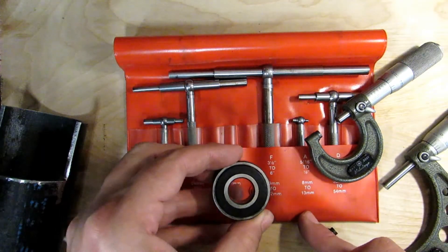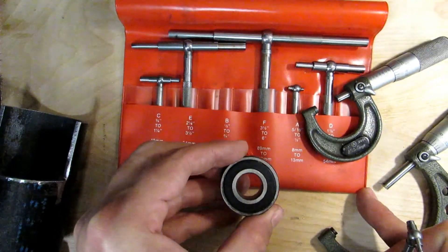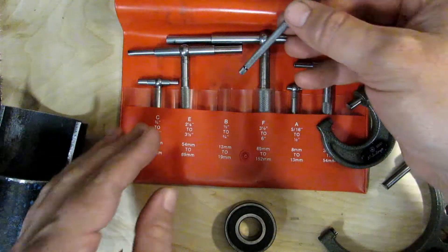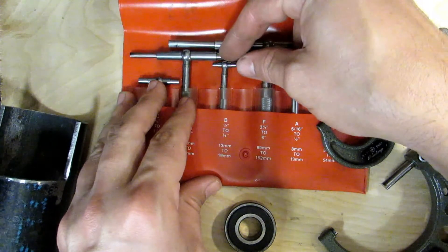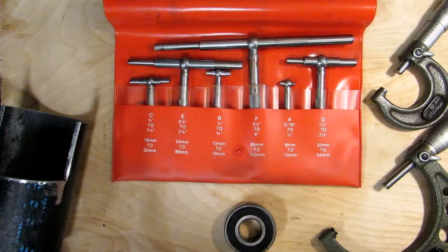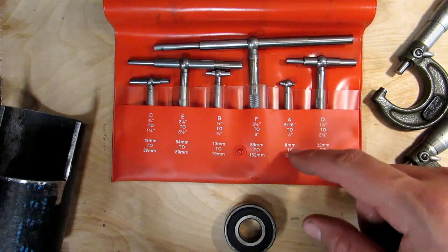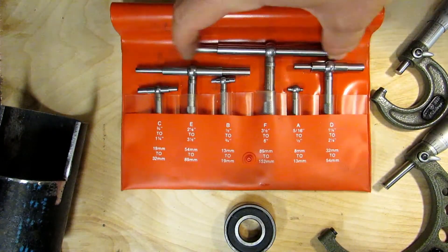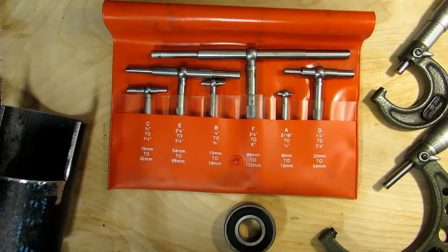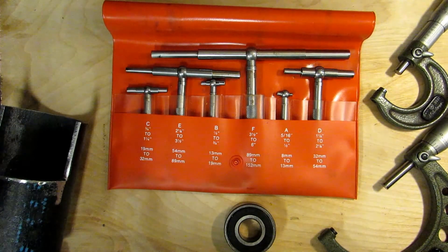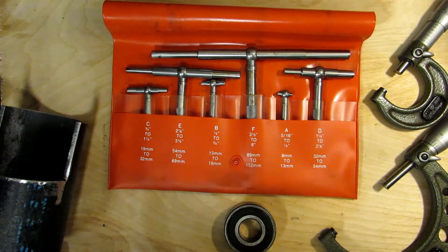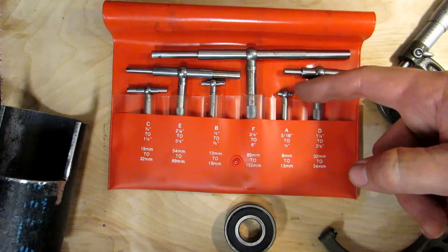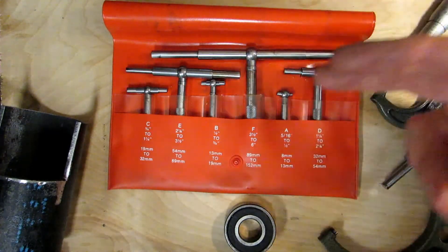So these sets measure from 5/16ths all the way up to six inches, which covers the vast majority of things that you would probably be making in a machine shop bore-wise. I think you can get larger ones as well, but the standard sets go from A through F, six pieces, all the way up to six inches.